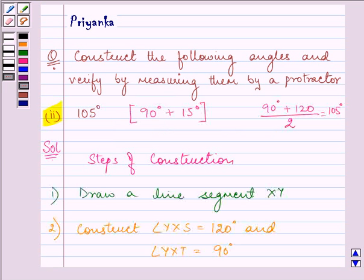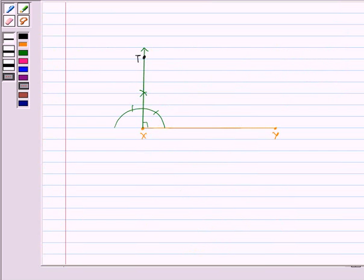The second thing we need to draw is angle YXS equal to 120 degrees. This is very easy to do. What I need to do is join X with the second arc that I draw.